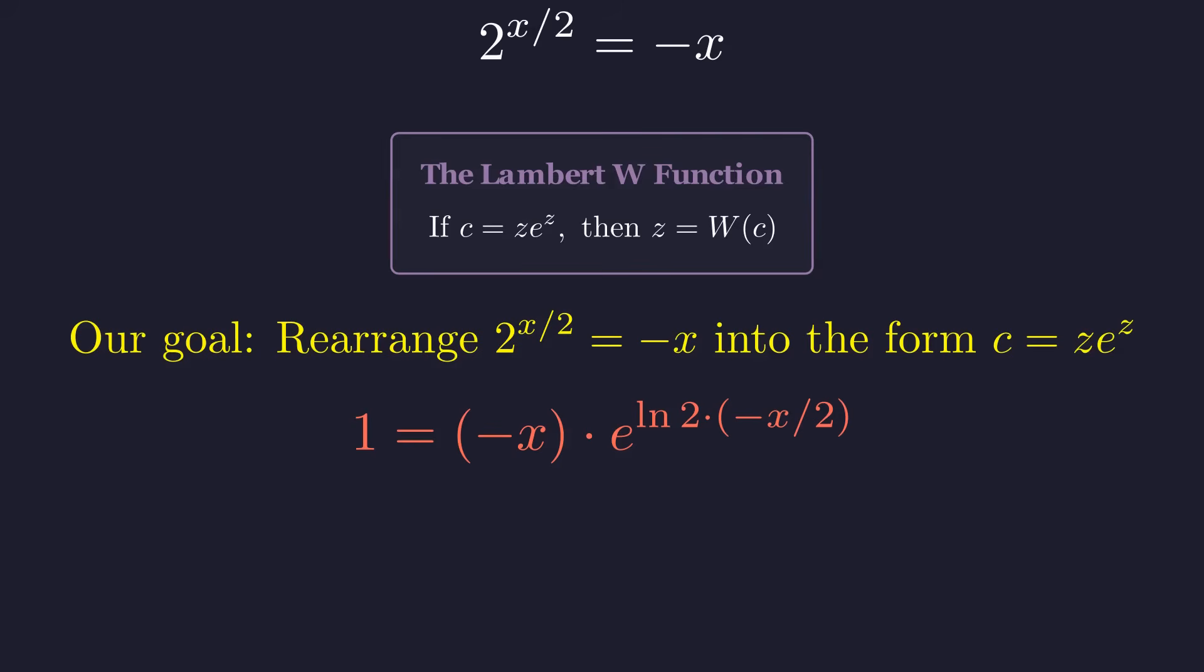For the z times e to the z pattern, the coefficient in front needs to match what's in the exponent. We can achieve this by factoring out the right constant. Perfect! Even though x is negative, notice that our z term here is actually positive. This is exactly the form we need for the Lambert W function.